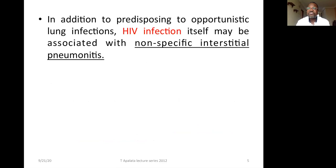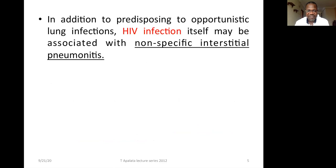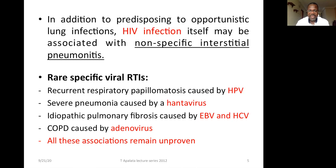In addition, HIV infection itself has been known to be directly associated with causing viral pneumonitis, giving a picture called nonspecific interstitial pneumonitis. We have also seen other rare specific causes: recurrent respiratory papillomatosis caused by HPV, severe pneumonia caused by Hantavirus, idiopathic pulmonary fibrosis associated with EBV or hepatitis C virus, and COPD associated with adenovirus. However, all these have been unproven associations.